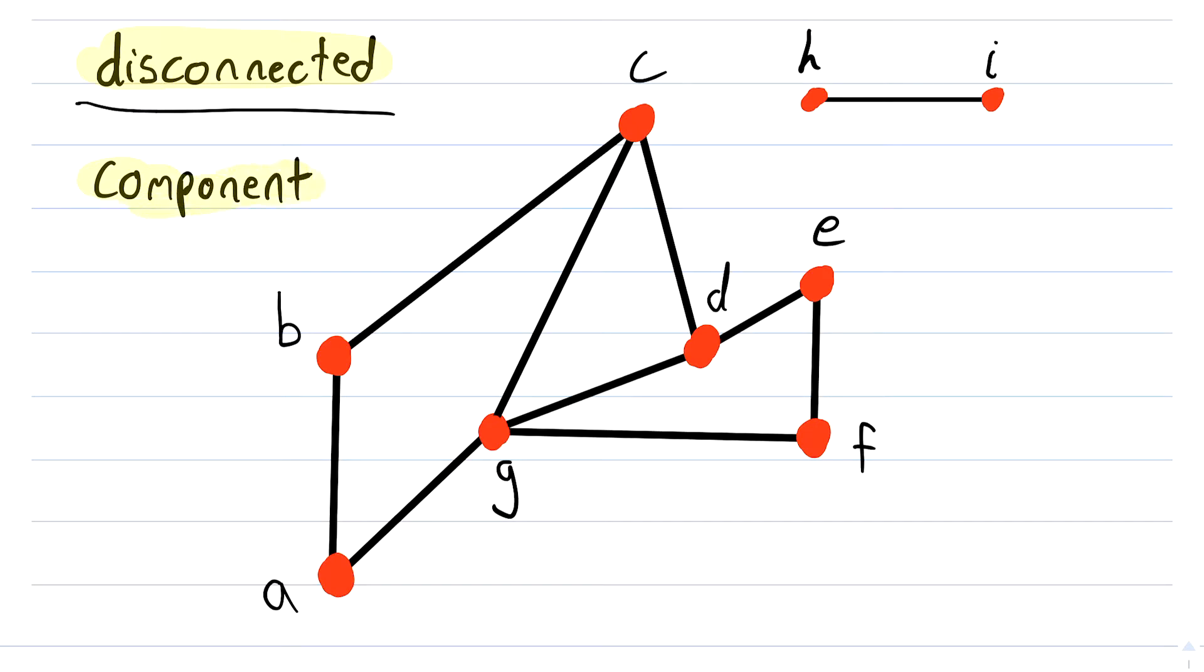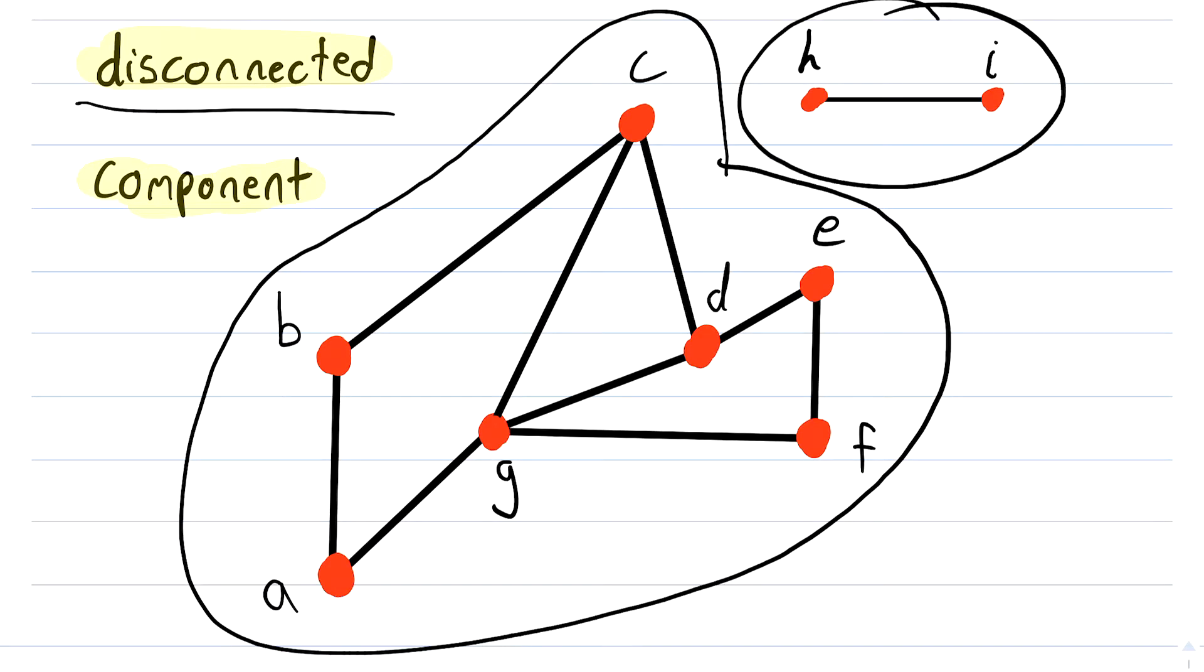Component is the word I just used there, so what is a component of a disconnected graph? Well, we'll go over that more in detail in another lesson. But put simply, the components of a disconnected graph are the largest connected subgraphs, which are these in this case. So again, every disconnected graph is made up of connected components.